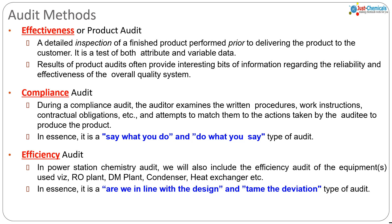In the second type — compliance audit — there may be two or even three aspects dealt with by the chemistry department. These include DM water quality against the standard adopted by the plant, steam water quality against the standard adopted by the plant, and condensate polishing unit outlet water quality against set standards. The standards may be from VGB, EPRI, or OEM standards.